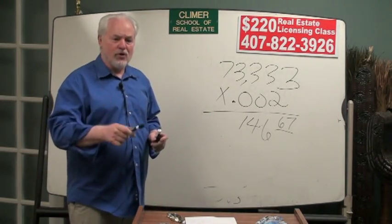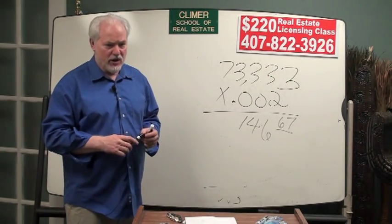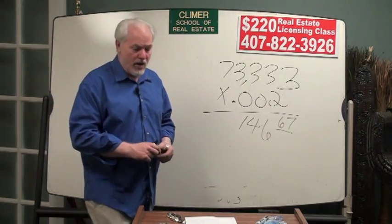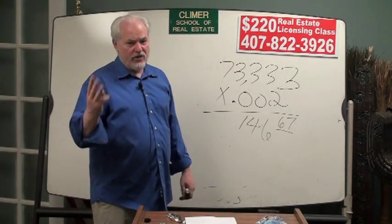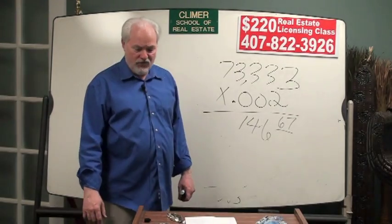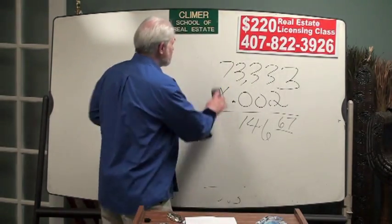$146.67 is the intangible tax. This tax is on brand-new mortgages only. It's not on assumed mortgages, it's not on subject-to mortgages, it's only on brand-new mortgages. It's called intangible tax. Purpose of all three of these amounts of money is revenue for the state of Florida. That's a question on the test, the easy test.